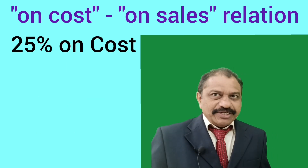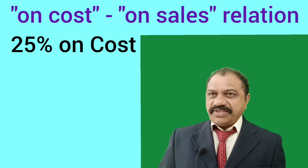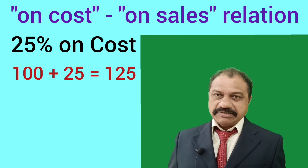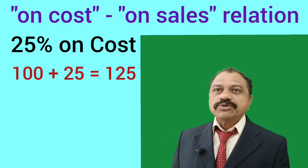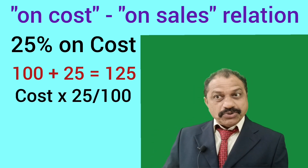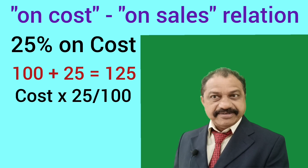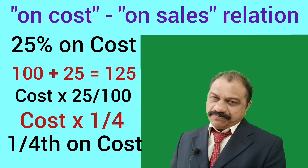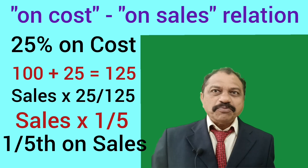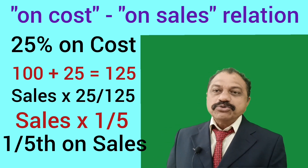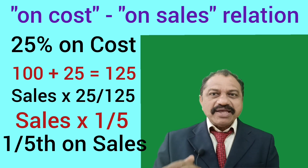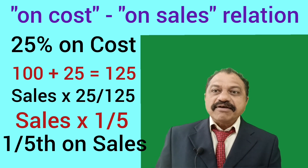Example 2 — Profit is 25% on cost. Here 100 stands for cost. Cost plus Profit is equal to Sales: 100 plus 25 is equal to 125. Point number 1: Profit on cost is equal to Cost into 25 divided by 100, that is Cost into 1 by 4 — stated as one-fourth on cost. Point number 2: Profit on sales is equal to Sales into 25 divided by 125, that is Sales into 1 by 5 — stated as one-fifth on sales.